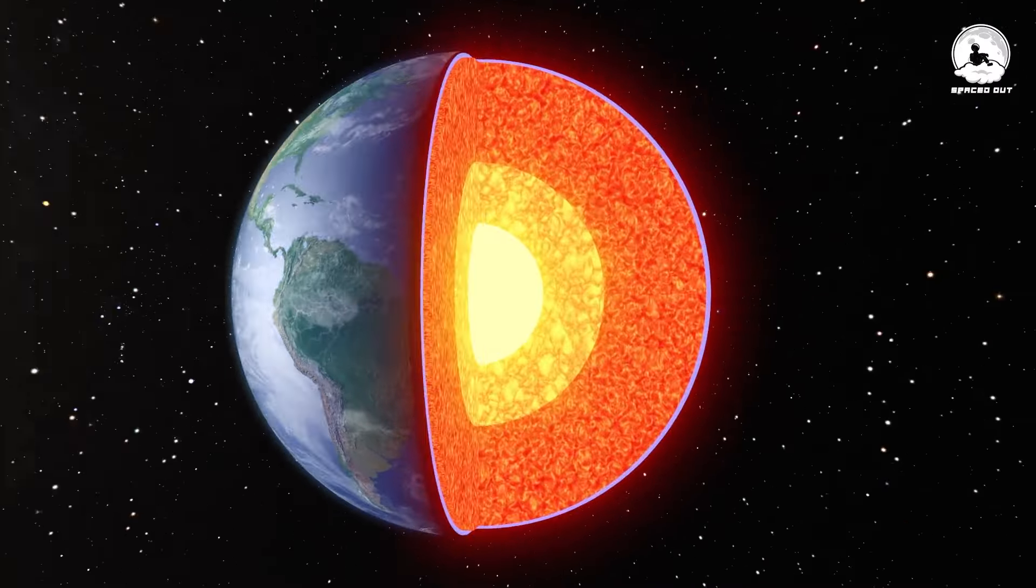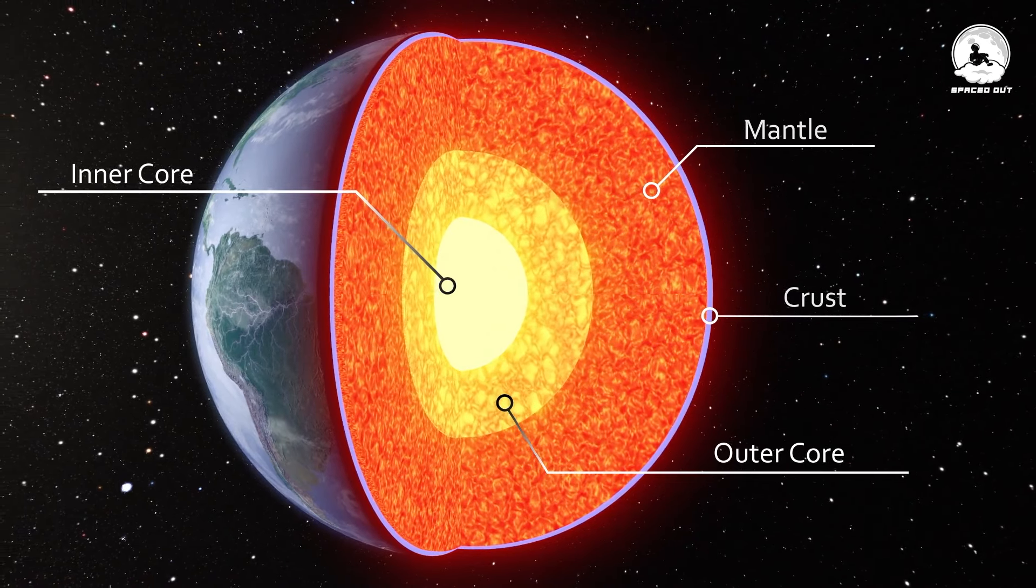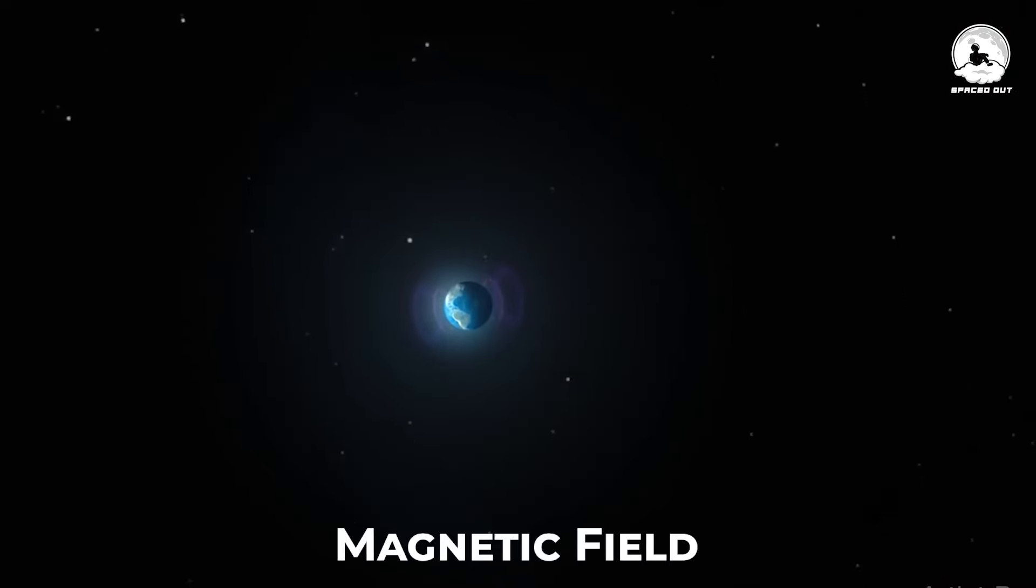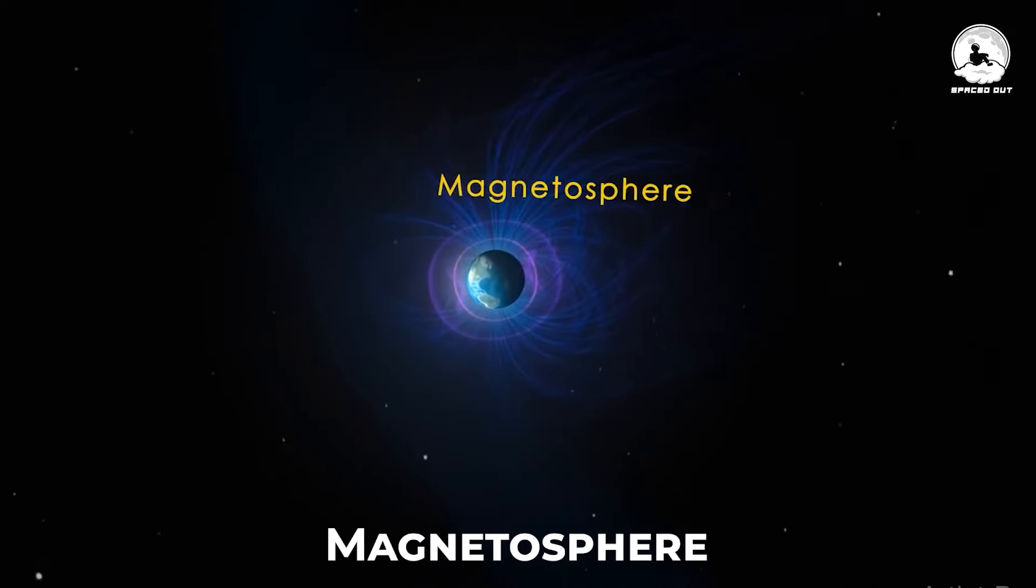The outer core is in constant motion due to the Earth's rotation, creating electric currents within the liquid metal. These currents generate a magnetic field, extending beyond the planet's surface into space, forming the magnetosphere.